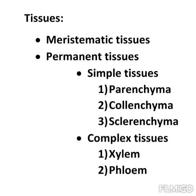So the two types of tissues are meristematic tissue and permanent tissue. Permanent tissues are further divided into two types: simple tissues and complex tissues. Simple tissues are homogeneous tissues composed of structurally and functionally similar cells — meaning the same type of cells are grouped together. Examples include parenchyma, colenchyma, and sclerenchyma.